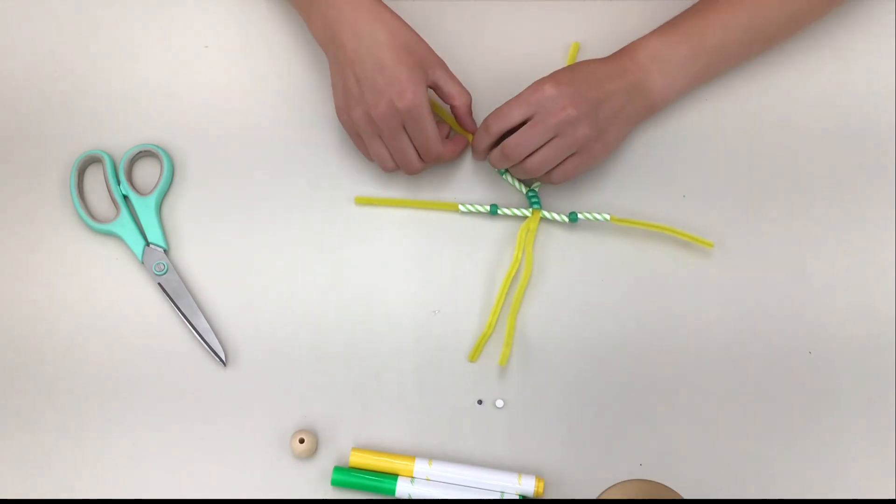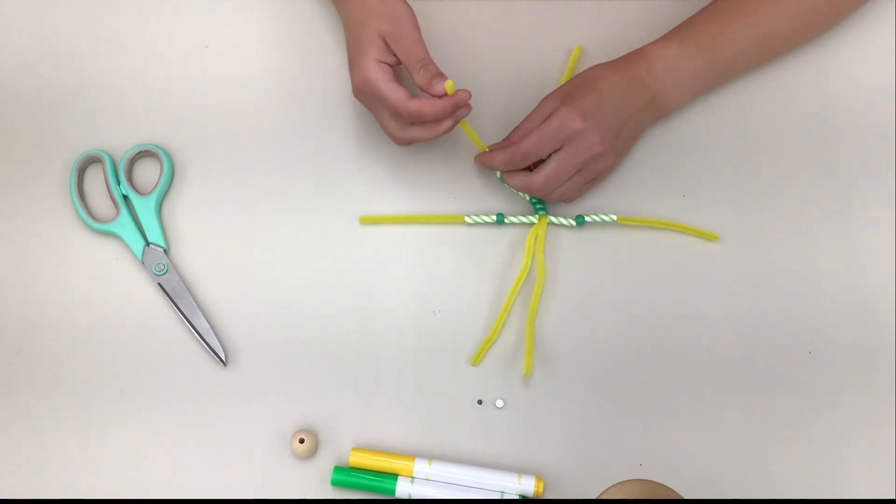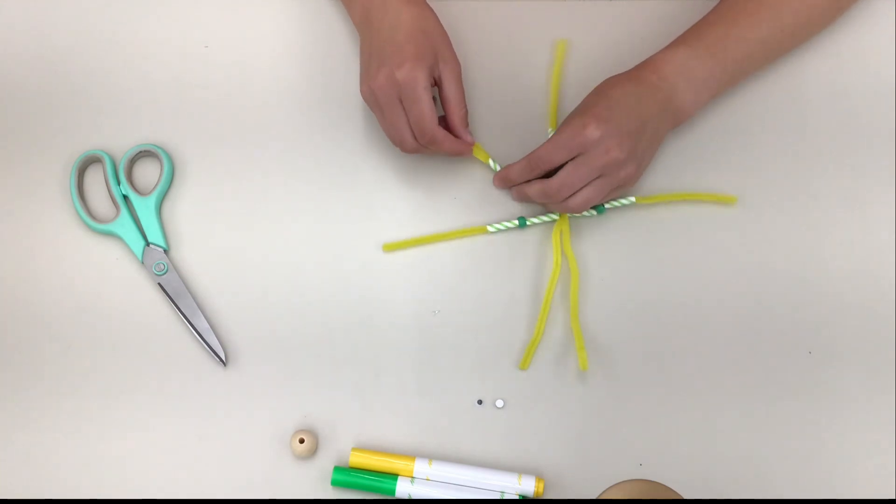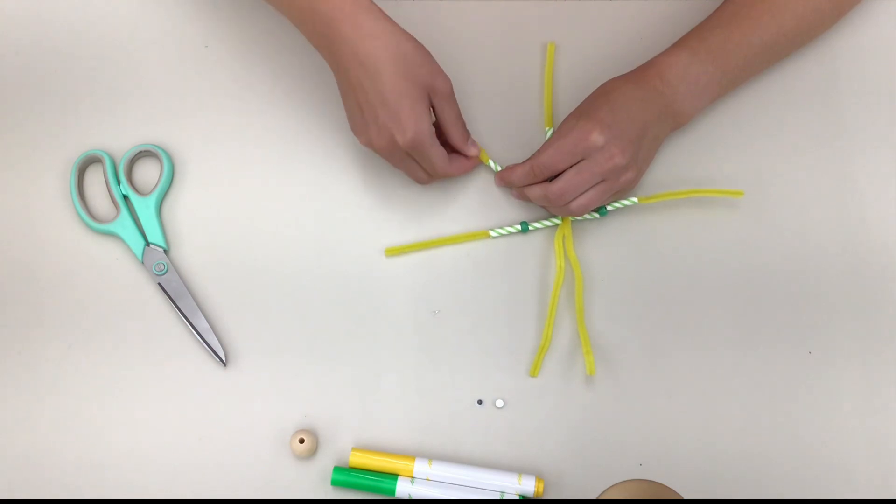To form your superhero's feet, bend the pipe cleaner and push it back into the straw to make a loop. Then twist and shape it into the shape of a foot, just like this. Do this for the other leg too.